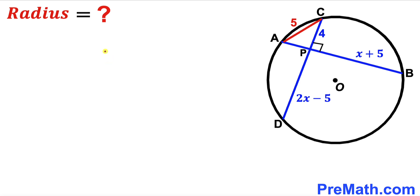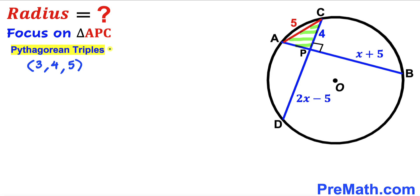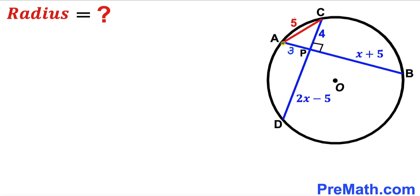Before we can calculate the radius of this circle, we must find the value of X first. Let's focus on right triangle APC and recall the Pythagorean triplet 3, 4, and 5. We know our hypotenuse is 5 and this leg is 4, so therefore side AP is going to be 3 units. So we have figured out segment AP as 3 units.